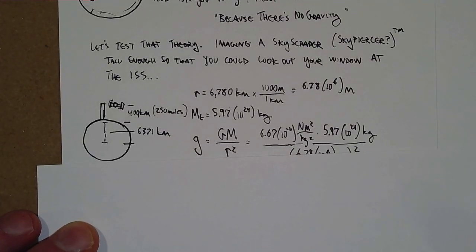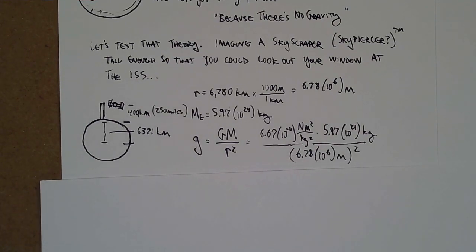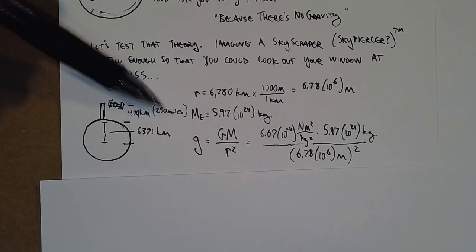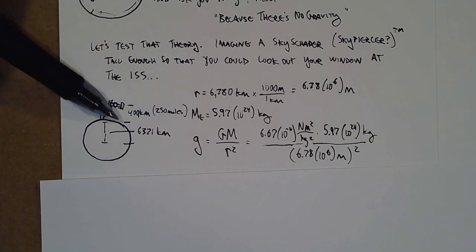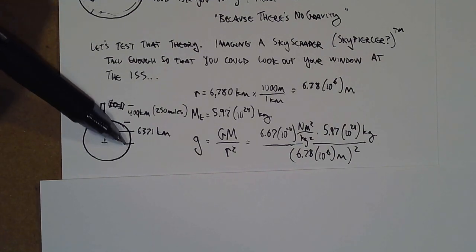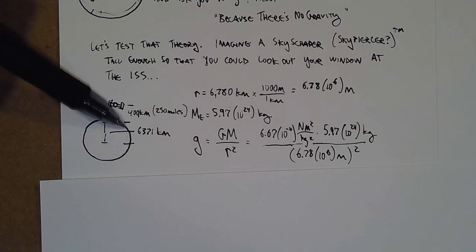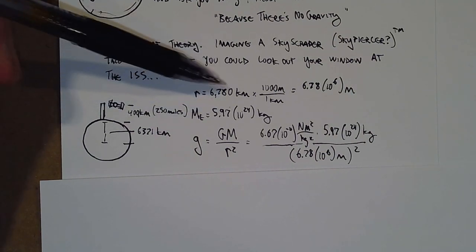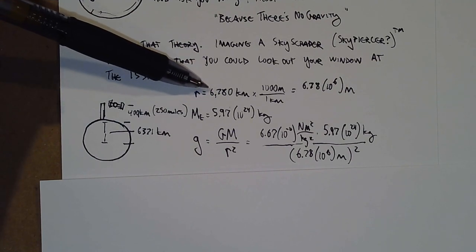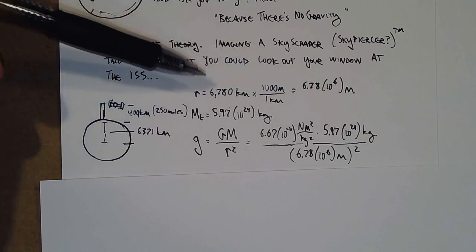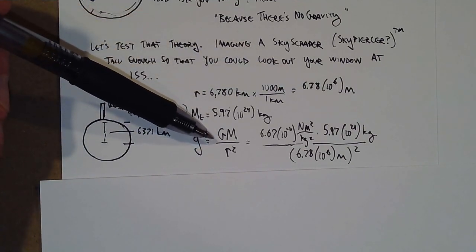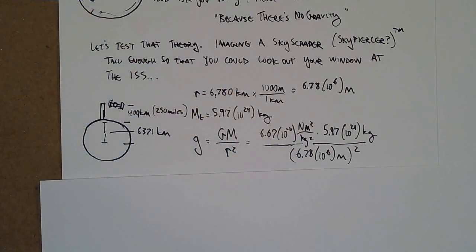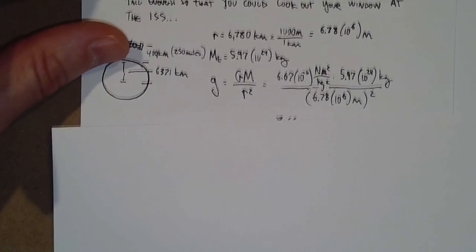If we take a look at the calculations, the International Space Station orbits at a height of approximately 250 miles above the surface, but that's not the distance we use - we have to go all the way to the center of the Earth. The Earth is around 6,400 kilometers in radius. Add another 400 kilometers for the altitude, so our total distance is around 6,800 kilometers. Convert that to meters, plug in the mass of the Earth, and the answer is unequivocally no - gravity has not decreased enough to account for floating.